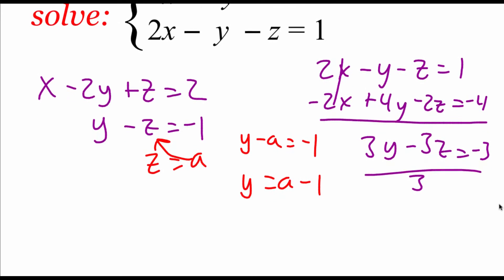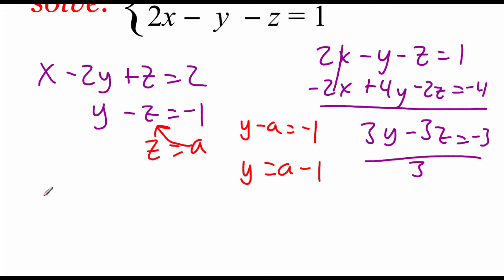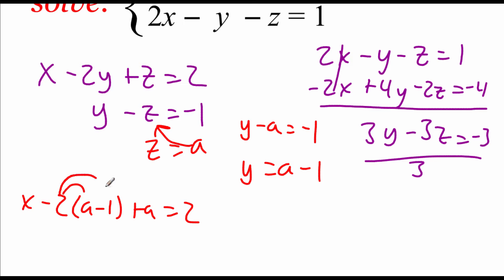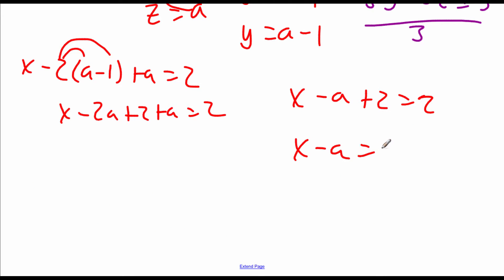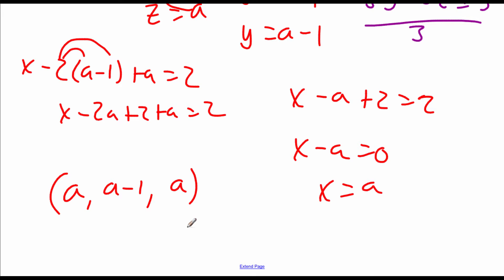Then we need to take those values and plug them into our top equation to get our x value. So x minus 2 times (a minus 1) plus a equals 2. Distributing the negative 2 through the parentheses gives x minus 2a plus 2 plus a equals 2. Combining like terms, x minus a plus 2 equals 2. Subtracting 2 from both sides, we get x minus a equals 0, so x equals a. Writing this out as our ordered triple: our x value is a, our y value is a minus 1, and our z value is a. So here's our solution to this non-square system.